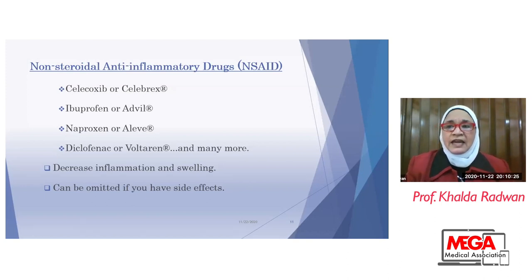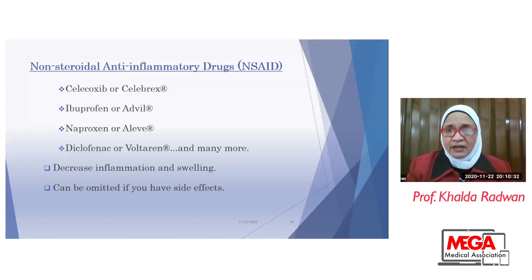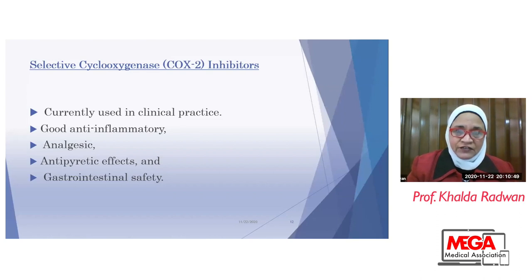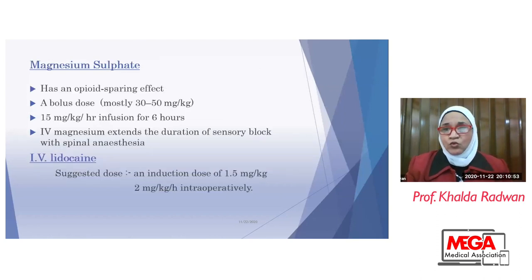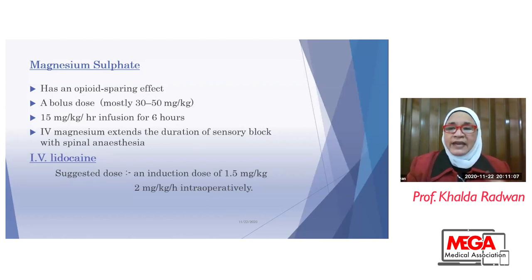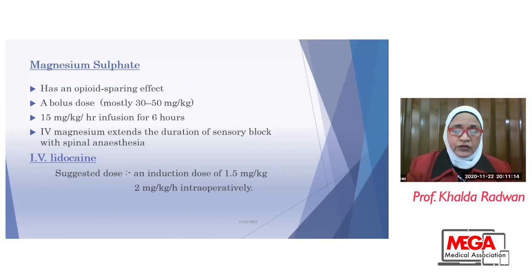At that time, we have to stop the drugs. There are selective COX-2 inhibitors, which are currently used in clinical practice. They are good anti-inflammatory drugs with analgesic and antipyretic effects with gastrointestinal safety, unlike non-steroidal anti-inflammatory drugs. Magnesium sulfate is also thought to have opioid-sparing effects. It can be used preoperatively and continued postoperatively, given as a bolus of 30 to 50 mg/kg or by infusion for six hours or even up to 48 hours postoperatively.